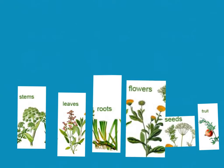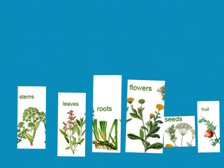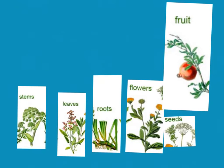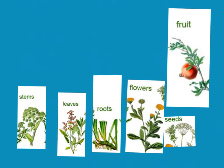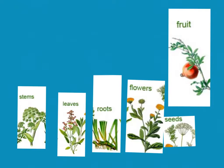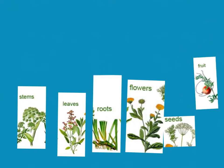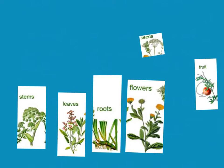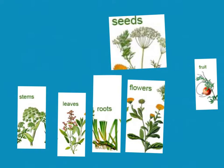And from the flowers, we get fruit. And the fruit holds the seeds, and so it protects the seeds so that nothing can hurt them. So that when the seeds are dispersed, or they are sent out, they are able to make new seeds.